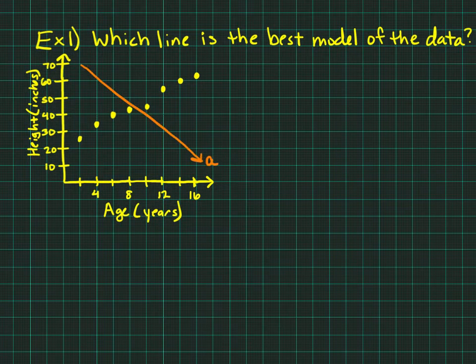There's line A. It does go through some points, but it's not even going the same direction as the points, so we would say that's probably not a good model for the data.